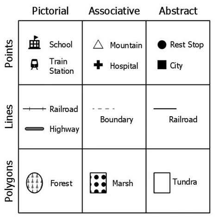Symbols are used in cartography to communicate geographical information, generally as point, line, or area features. As with other symbols, visual variables such as size, shape, orientation, texture, and pattern provide meaning to the symbol. According to semiotics, map symbols are read by map users when they make a connection between the graphic mark on the map, a general concept, and a particular feature of the real world.